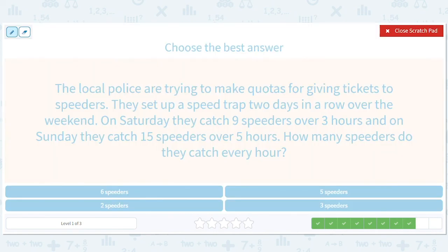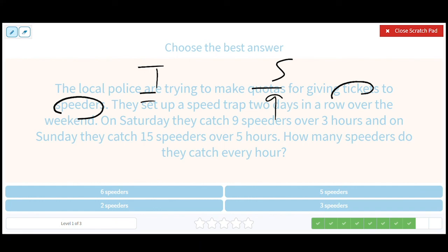So now we're giving tickets to speeders again. Tickets, speeders. They catch 9 speeders, 3 hours. They catch 15 speeders, 5 hours. You see the pattern. 9 divided by 3 is 3. 15 divided by 5 is 3. How many speeders they catch every hour. So 1. This should be 3. 3 speeders per hour.